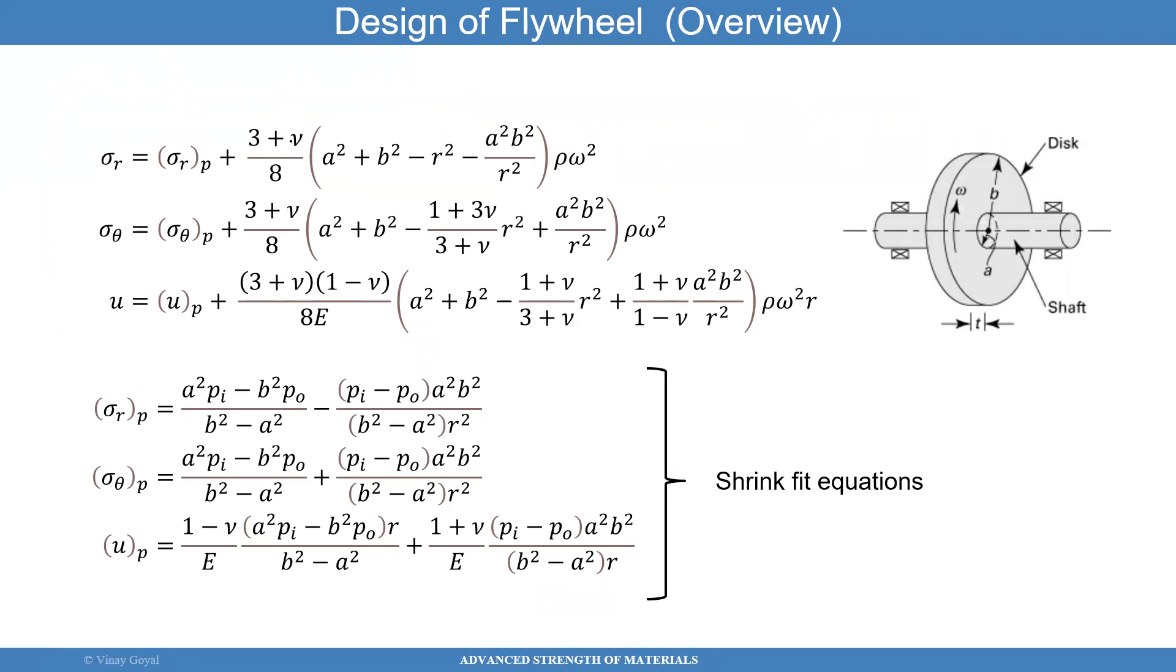And so, nu is Poisson's ratio. A is the inner radius of that disk. B is the outer radius. R is a coordinate, R, that we're discussing the whole time, which is in the radial direction. And then, rho is the density of the material, and omega is the spinning speed. What is the spin of that? What is the speed of the spin?